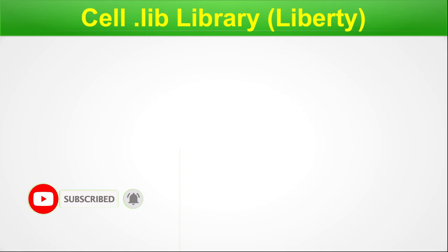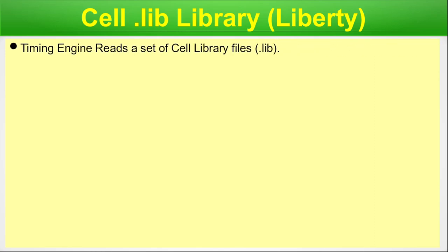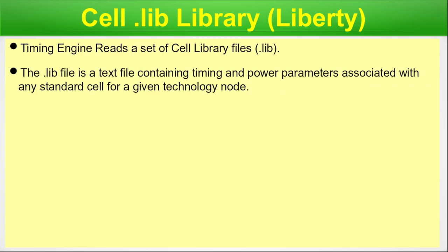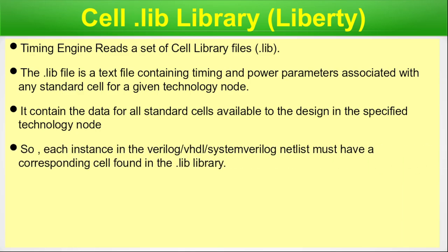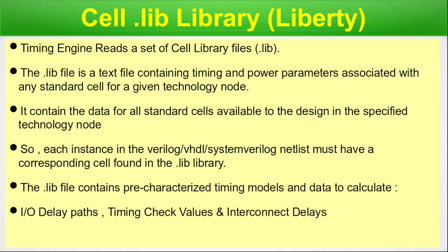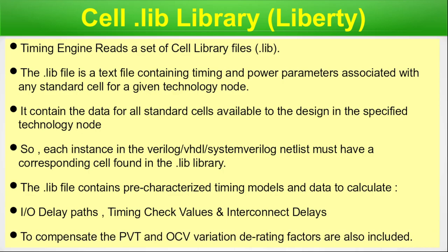Cell .lib library — the liberty timing library. The timing engine reads a set of cell library files, the .lib files. The .lib file is a text file containing timing and power parameters associated with any standard cell for a given technology node. It contains data for all standard cells in the design at the specified technology node. Each instance in the Verilog/VHDL/SystemVerilog netlist must have a corresponding cell found inside the .lib library. The .lib file contains pre-characterized timing models and data to calculate IO delay paths, timing check values, interconnect delays, and derating factors for PVT and OCV variation.